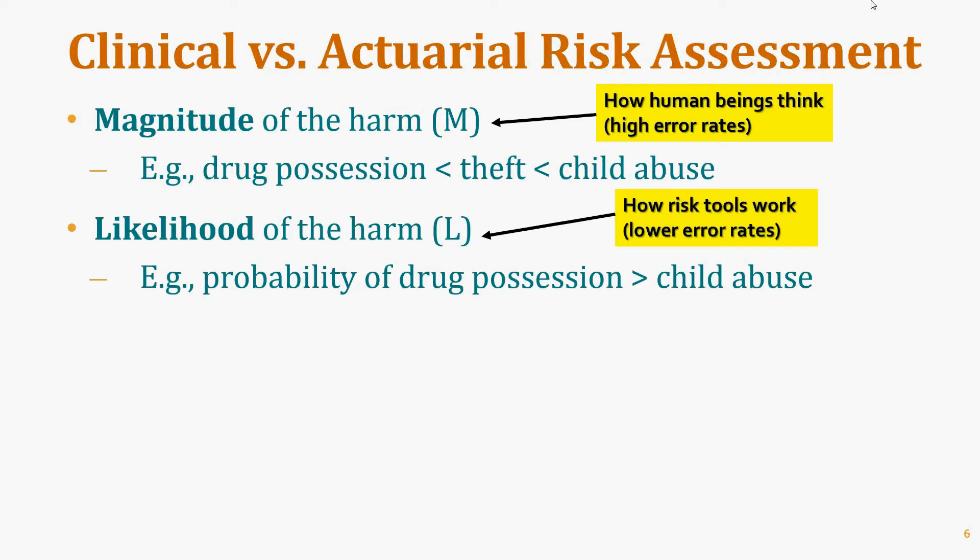Risk assessment tools are always superior to human and clinical judgment in estimating the likelihood of harm. The most accurate assessment of risk would be an interaction of magnitude times likelihood. Imagine a scale from 1 to 100 measuring magnitude — a very high likelihood of delivering a boring presentation has a very light magnitude of harm, and you'd just be inconvenienced for half an hour.